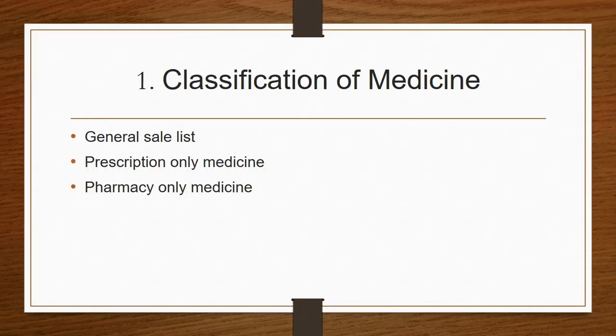My first question is about classification of medicine. The classification of medicine in pharmacology is in three categories: the general sale list, prescription only medicine, and pharmacy only medicine. Sometimes the question can be asked to explain or define what is prescription only medicine and give an example. They'll ask you for the classification and ask you for an example.